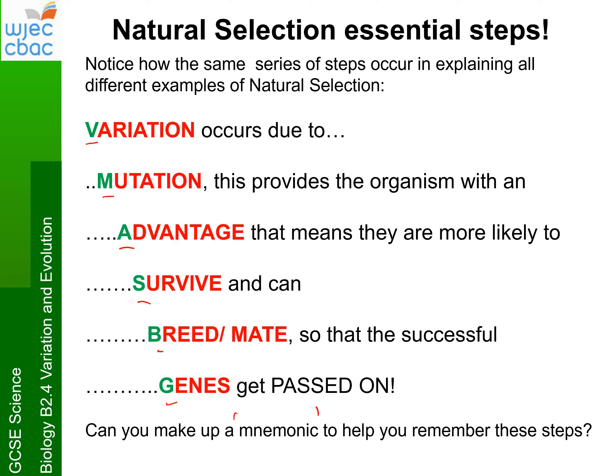The opposite — why species die out and become extinct, which we'll cover in a few lessons — is that the variation due to a mutation is not an advantage, meaning more organisms are less likely to survive, so they don't breed and mate and their genes don't get passed on. Think of both sides. Natural selection essential steps: you must have variety caused by mutation; it has to be advantageous in order for the organism to survive, breed and pass the genes on. Whenever you're using this series of steps, you've got to relate it to the specific example given — you will not just pick up the marks by saying these words.